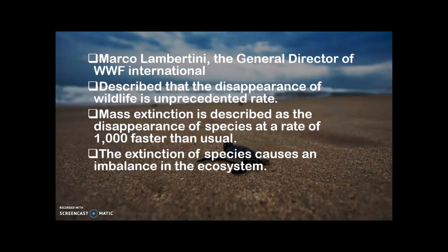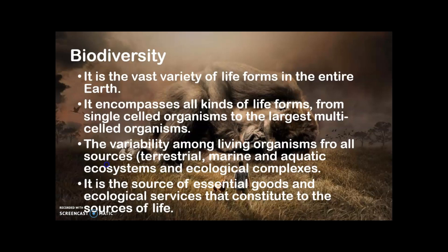It is timely to understand the pressing effects of species extinction and ecosystem imbalance, and to ask ourselves how we can help. Biodiversity and its ecosystem is defined as the variety of life forms on the entire earth, encompassing all kinds of life from single-celled organisms to the largest multi-celled organisms. Its definition is structural and functional, and not focused on individual species. The variability among living organisms from all sources — including terrestrial, marine, and other aquatic ecosystems — and the ecological complexes of which they are part, includes diversity within species, between species, and of ecosystems.